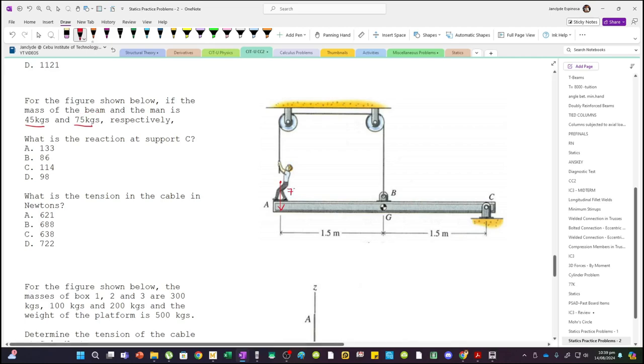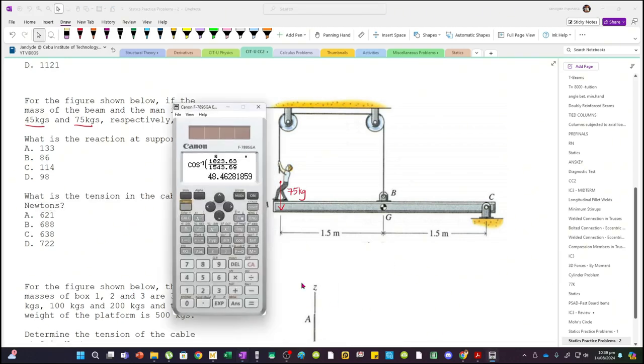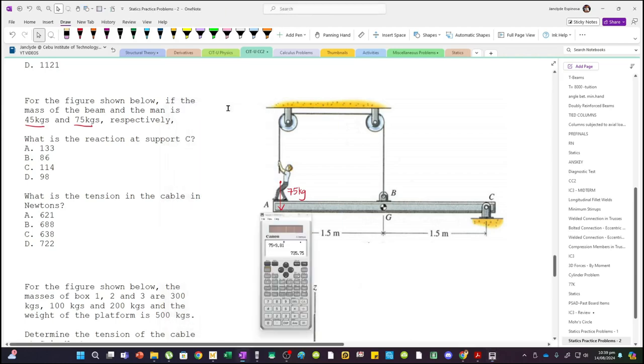But we need the reaction in Newtons, so let's convert 75 times 9.81, this is 735.75 Newtons.